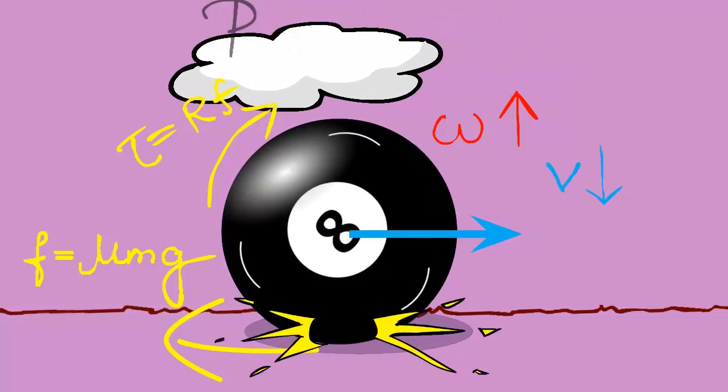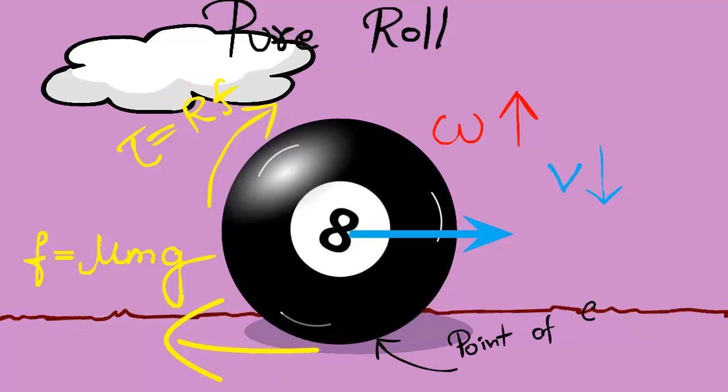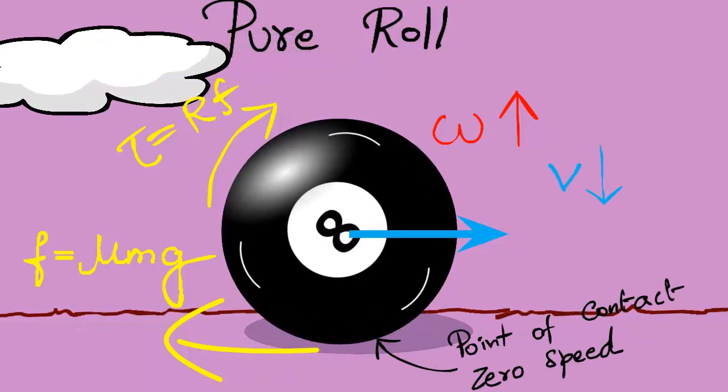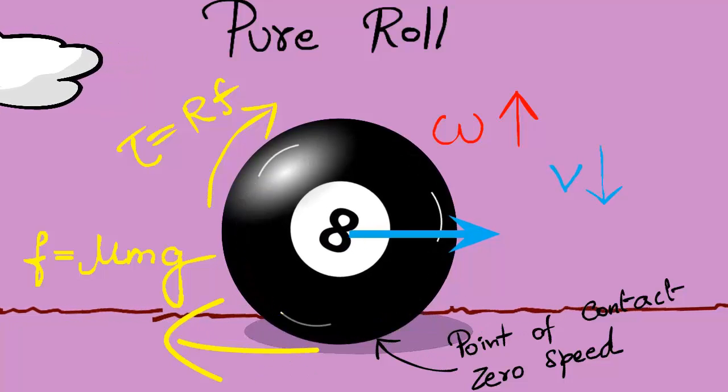When the point of contact will always be at rest relative to the table, and then friction disappears.